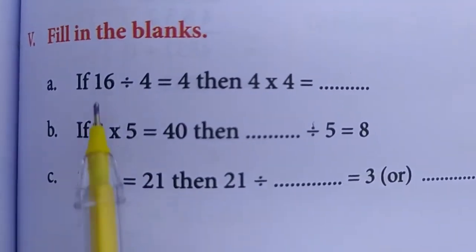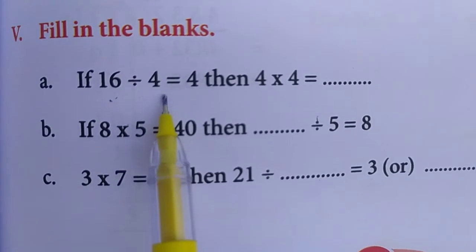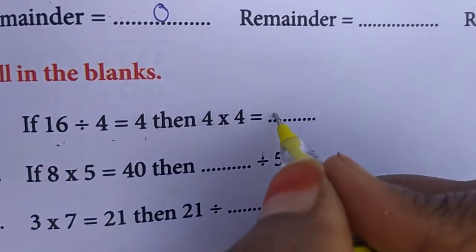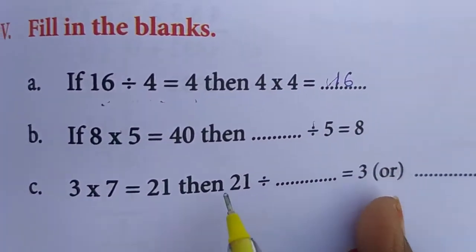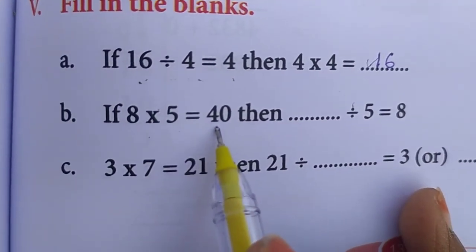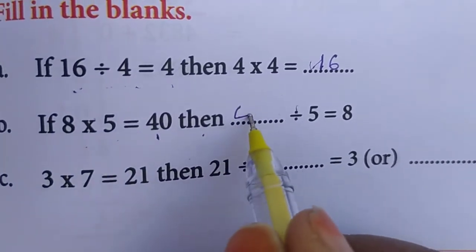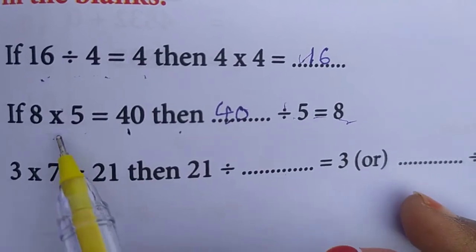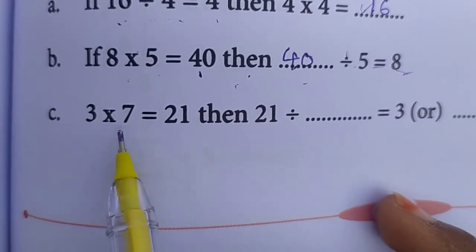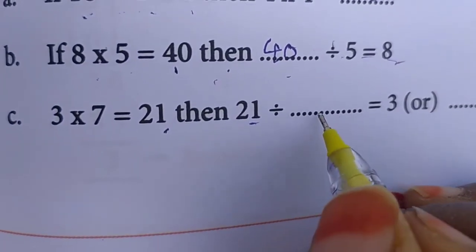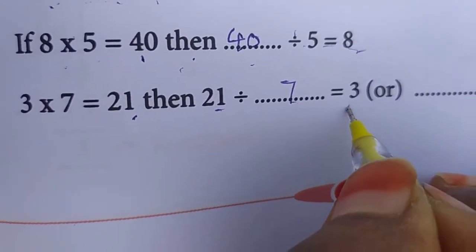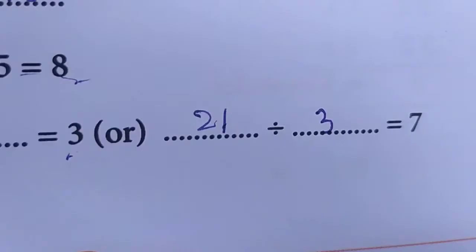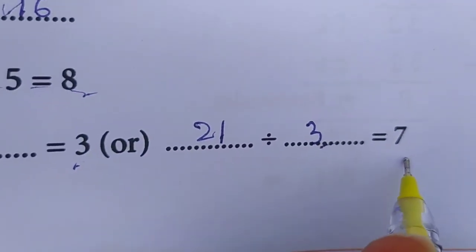Now fill in the blanks. If 16 divided by 4 is equal to 4, then 4 into 4 is, what? 4 fours are 16. If 8 into 5 is equal to 40, then 40 divided by 5 is 8. 8 fives are 40. 3 sevens are 21. 21 divided by 7 is 3. 21 divided by 3 is equal to 7.